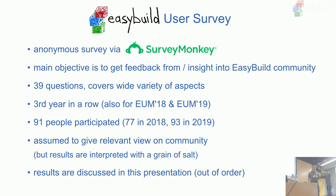In preparation for this meeting, we did a user survey — the third time we've organized this. It's an anonymous survey through SurveyMonkey to get more insight into the EasyBuild community and get feedback in an anonymous way so people don't have to be shy about saying things are broken or they're unhappy with certain aspects. It's 39 questions long, but we had 91 participants this year, which is pretty good.